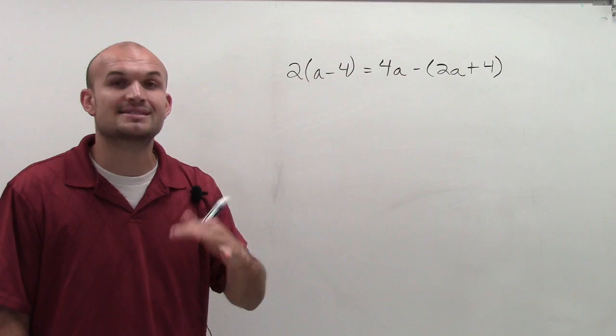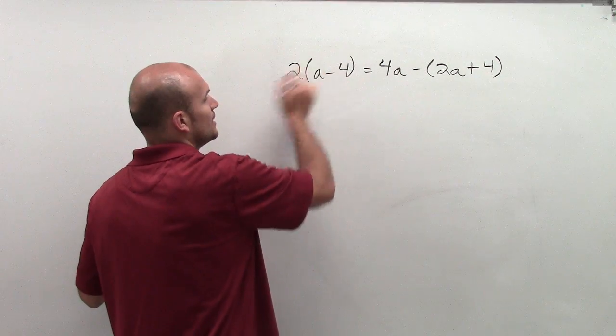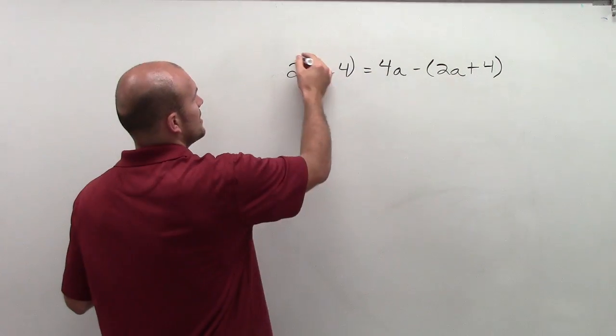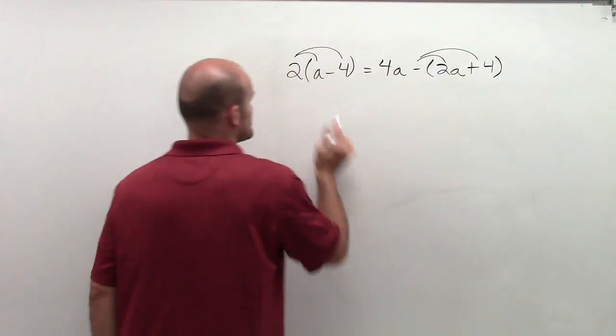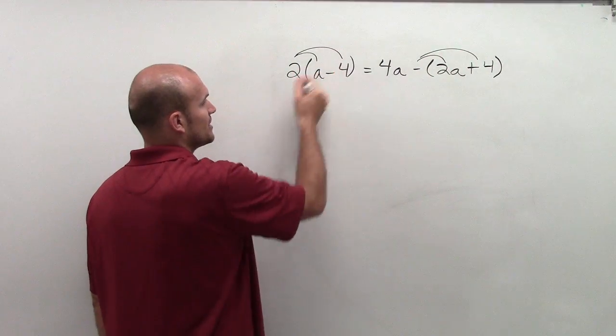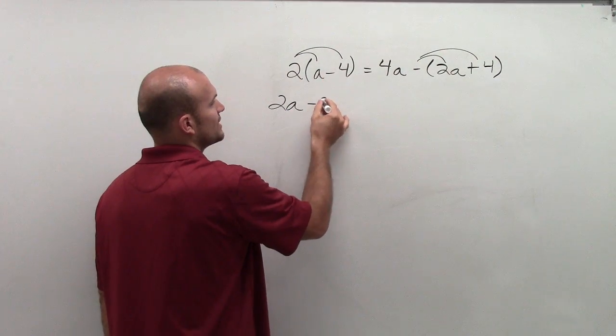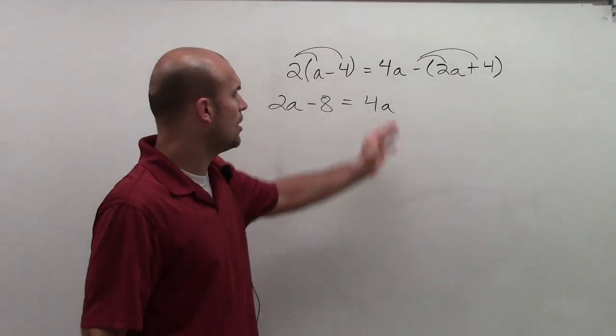But the main important thing I'm going to do is simplify. So I see my parentheses. I can't simplify inside those parentheses, but I can apply the distributive property. So here I have the number 2 in front, so I'm going to multiply that by a, which would be 2a, and 2 times negative 4 is negative 8. This equals 4a. A lot of students say, 'Oh well, there's no number there so don't do it.'